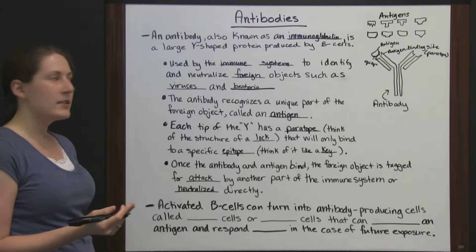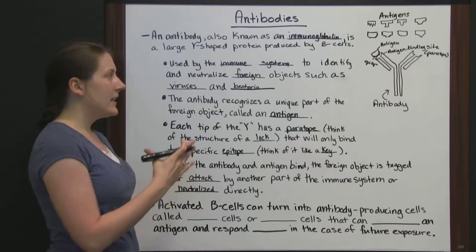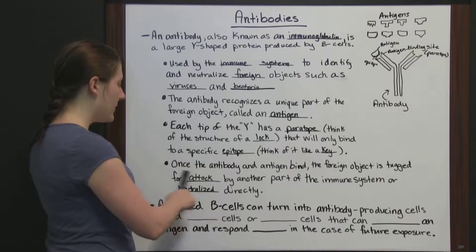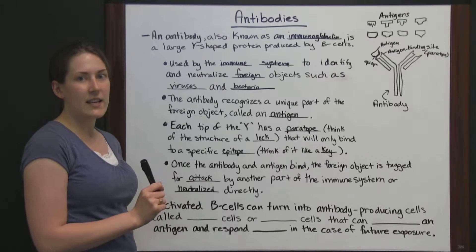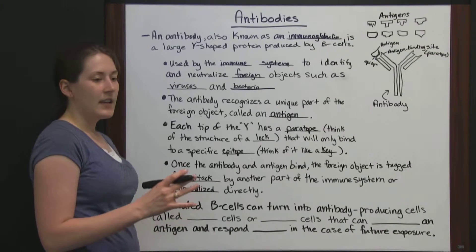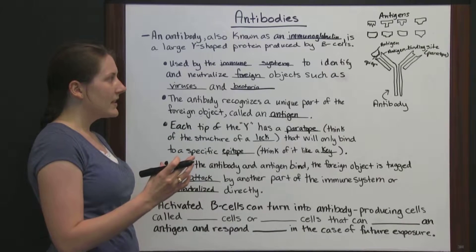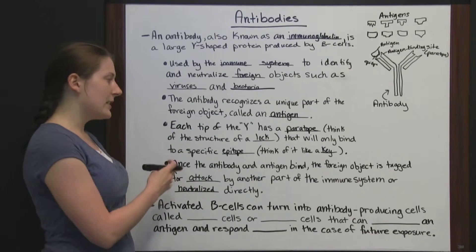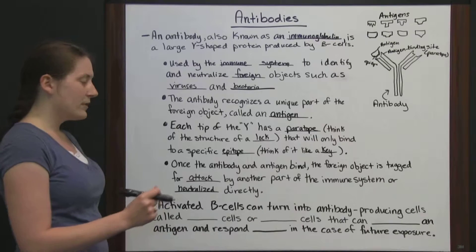There are some antigens, some foreign objects, where if we block the antigen, then that foreign object isn't going to be able to do any more harm in your body, so the antibody can neutralize it directly. There are other foreign objects that can't be neutralized quite so easily, so instead something is secreted by the antibody and it coats the foreign object, and then the foreign object is tagged for attack. Some other part of the immune system steps in and removes the foreign object.